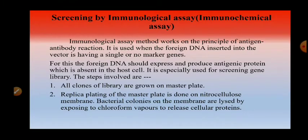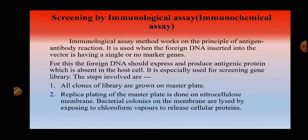The next method is screening by immunological assay, also called immunochemical assay. This method of selection of clones is used when your vector does not have two or more marker genes to identify the foreign DNA inserted inside it. The immunological assay method works on the principle of antigen-antibody reaction and is used when the foreign DNA is inserted into a vector having only one or no marker genes. The foreign DNA should first express and produce an antigenic protein, which is absent in the host cell. This method is especially used for screening of a gene library.